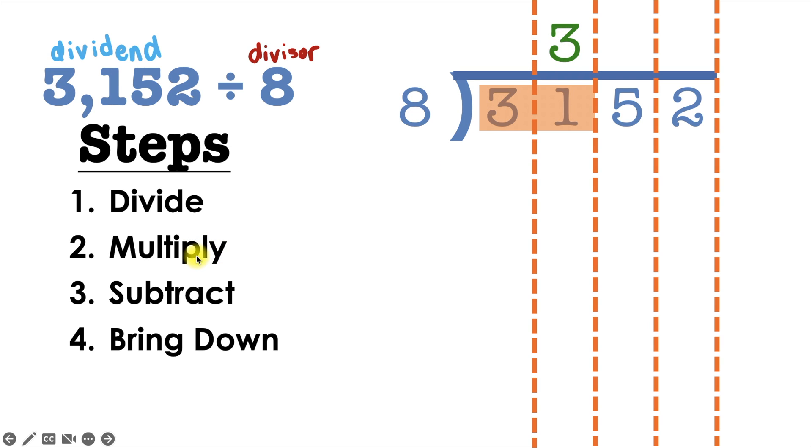That brings us to step 2, which is to multiply. And we're just multiplying 3 times 8 because that's going to give us 24. Then I'll subtract. 31 minus 24 is going to give us 7.